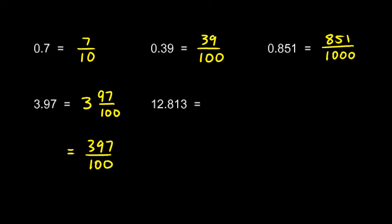Same thing happens here, twelve point eight one three. I can write that as twelve, and then the point eight one three is eight hundred and thirteen thousandths. Or I could write it as twelve thousand eight hundred and thirteen thousandths.